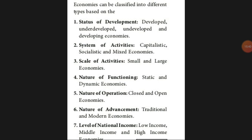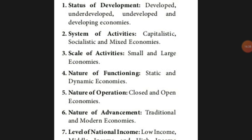Next we go to economic classification, which has different types. First is the status of development: a country can be developed, like America; underdeveloped, like Nepal or Afghanistan; or a developing country like India. Second is system activity: capitalism, socialism, or mixed economy.